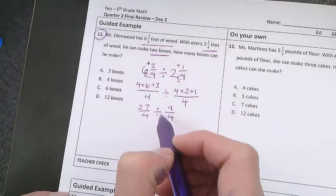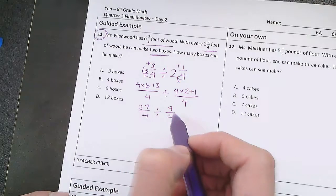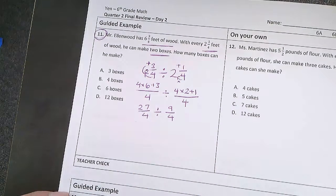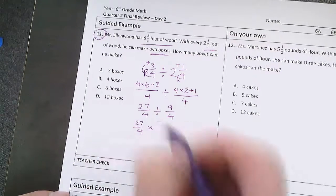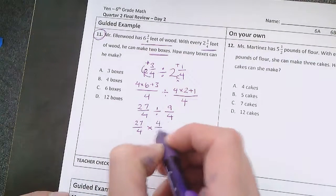And anytime you're dividing by a fraction it's the same thing as multiplying by the reciprocal. So this is equal to 27/4 times 4/9.